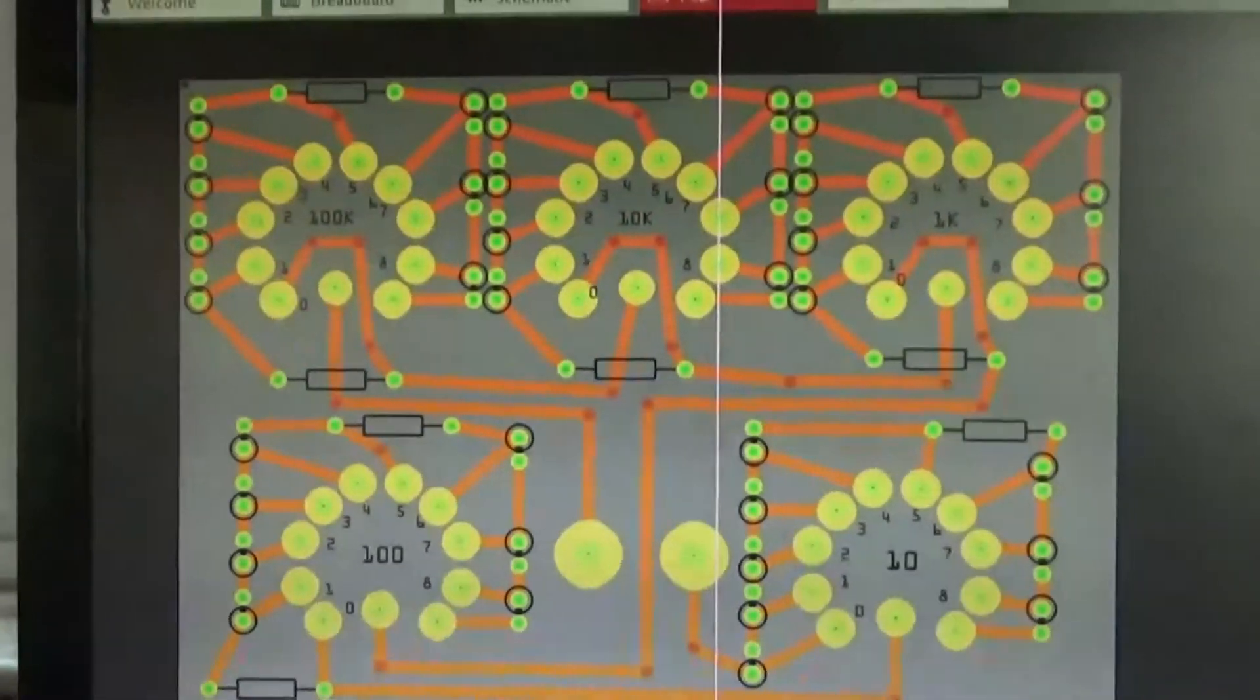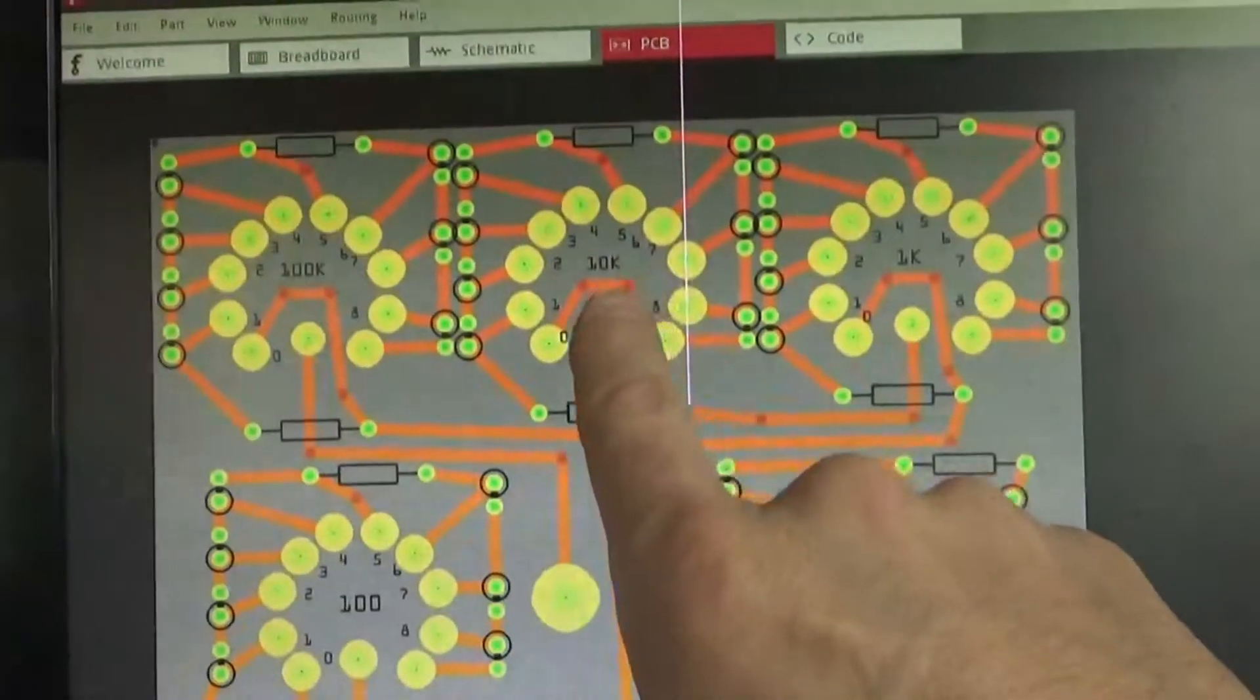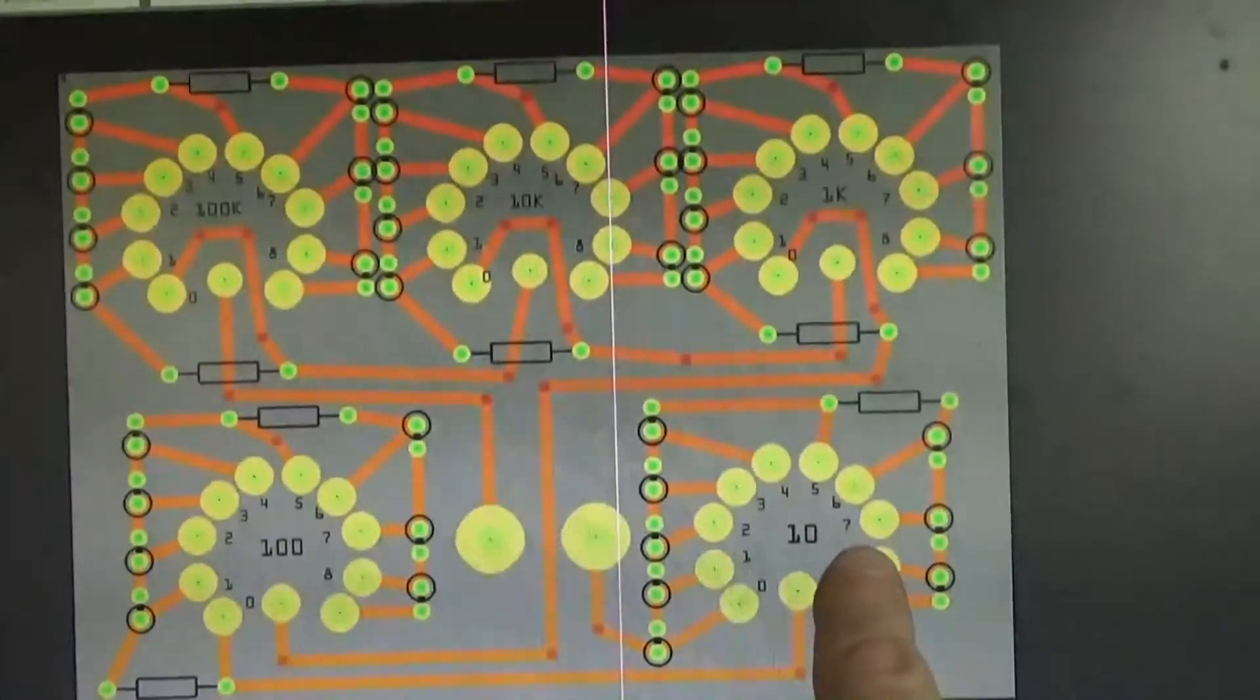This is my PCB. We have the 100k, 10k, 1k, 100 ohm, and 10 ohm resistors.